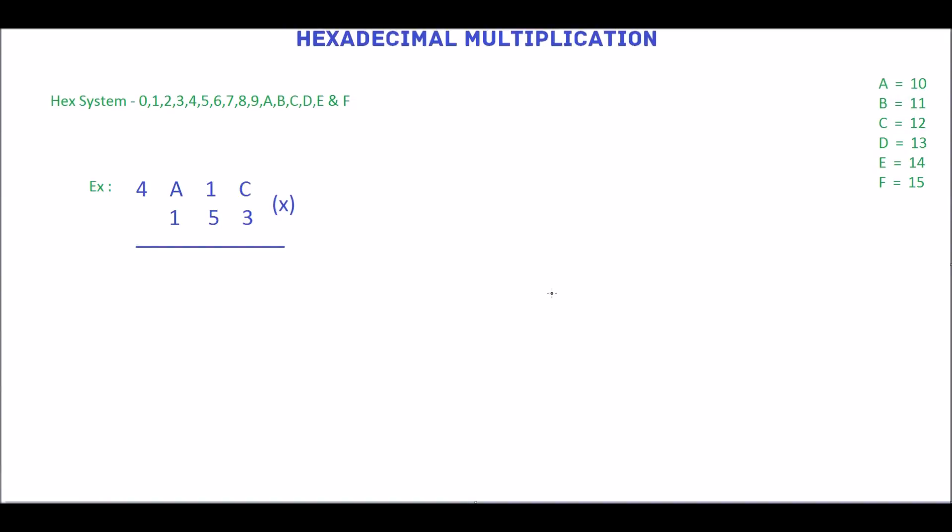In this tutorial we will see hexadecimal multiplication. We will solve this example. First multiply 4A1C by 3.